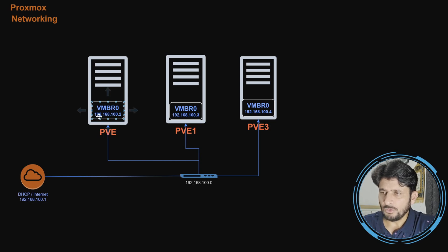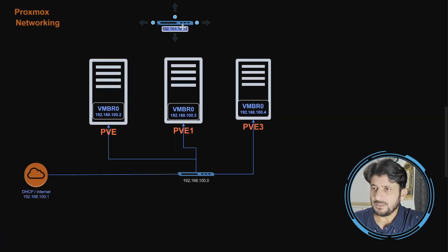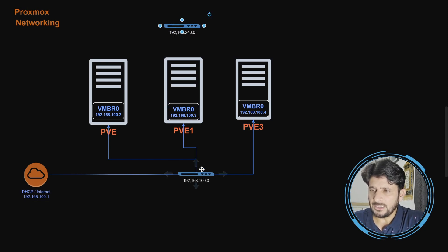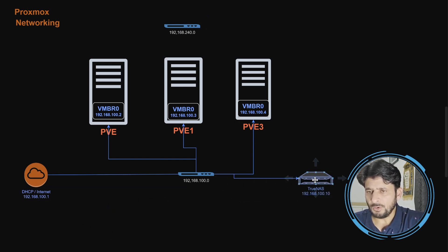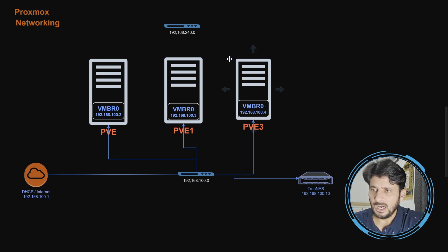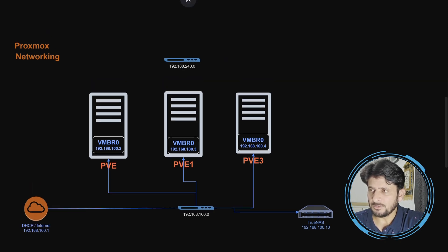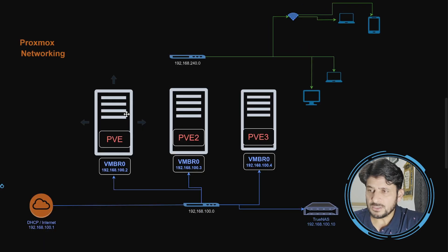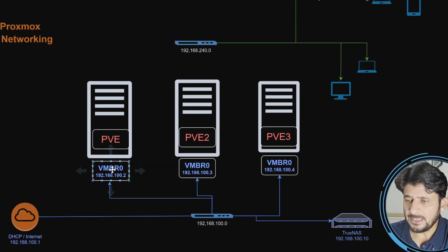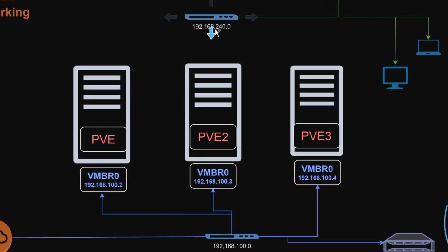I have manually configured a second switch with another network defined as 192.168.240.0, so I isolated one network to make sure communication between all these servers takes place. At the same time, I have connected TrueNAS — which is mainly for backup or NFS for all Proxmox nodes — so the communication between these nodes and TrueNAS is isolated from the other computers on the network. All of these nodes have two LAN cards: one physical LAN card connected to the main network and one physical LAN card connected to this isolated network.